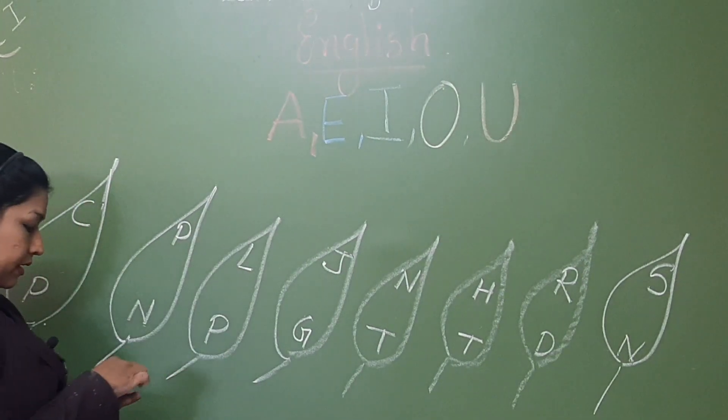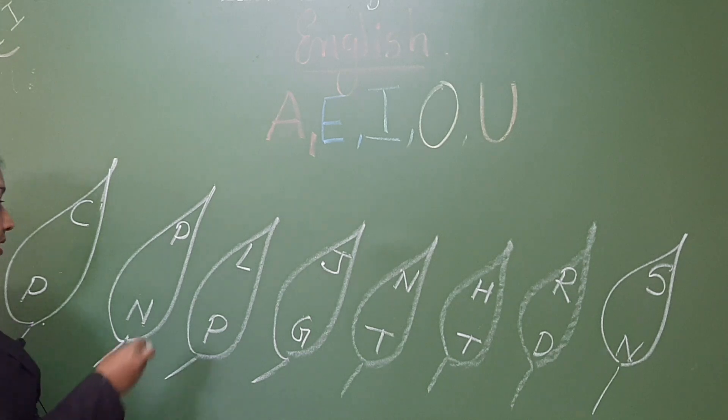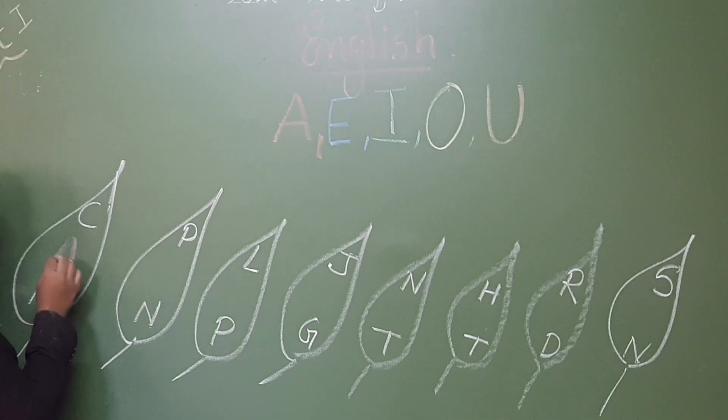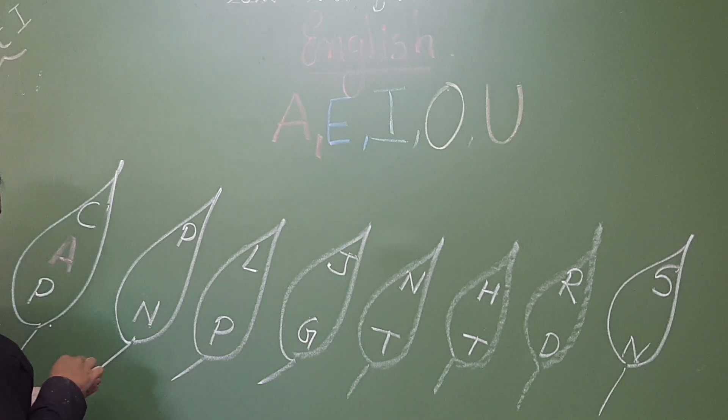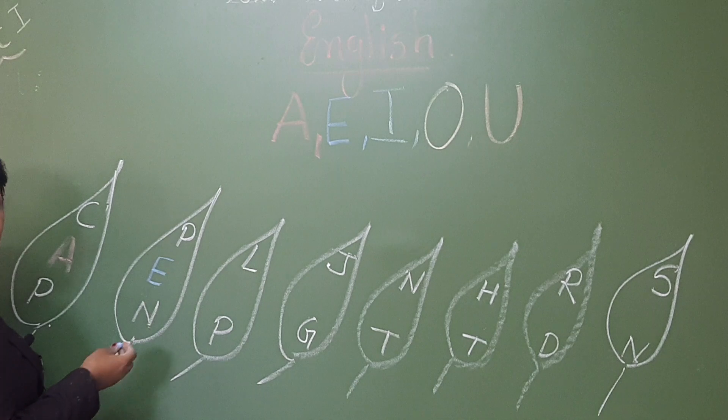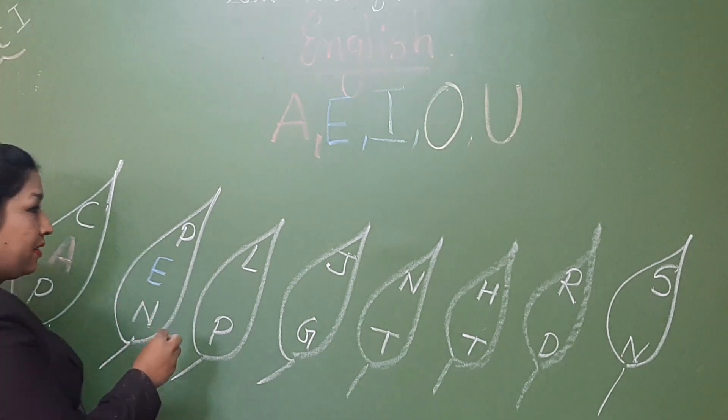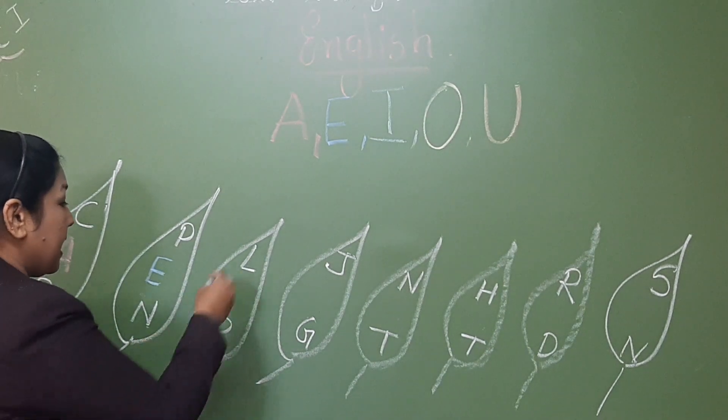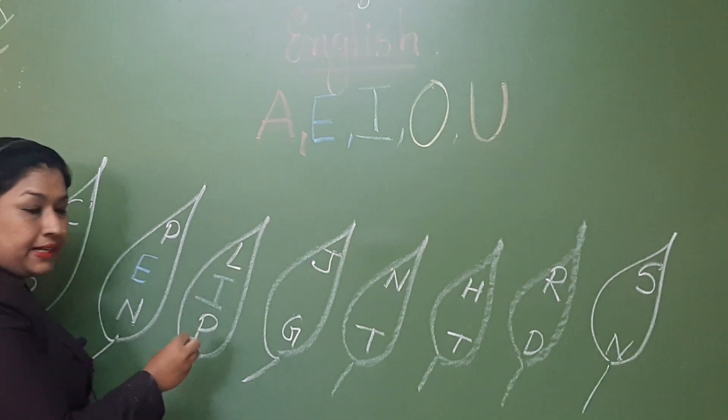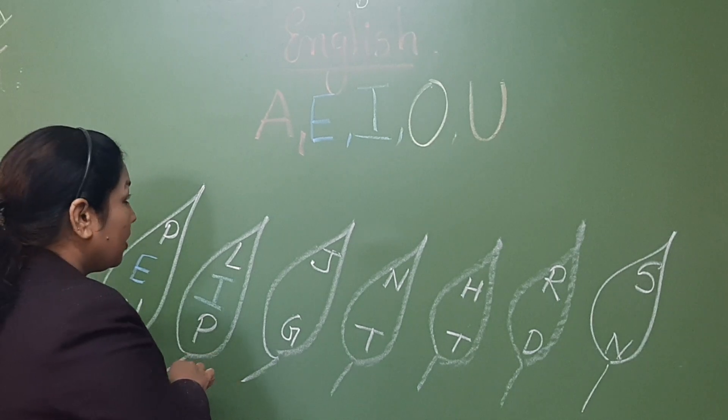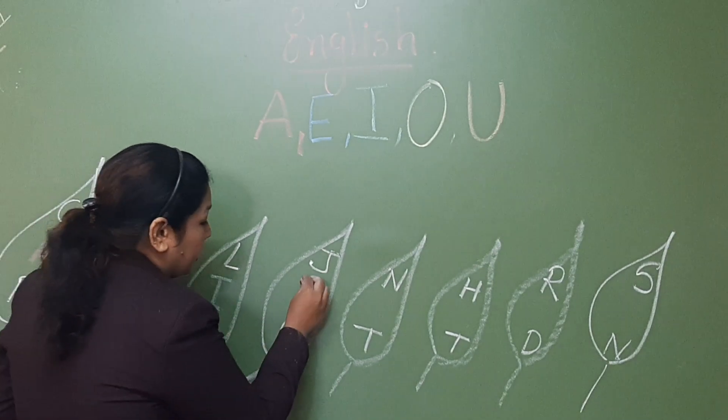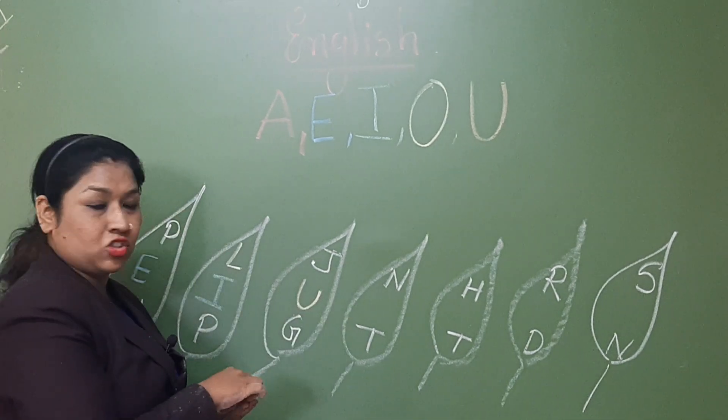So here for writing a pen cap, C, A, P, cap, you will write with pink color only. P, E, N, pen, E with blue color. L, I, P, lip, I with green color. J, U, G, jug, U with orange color.